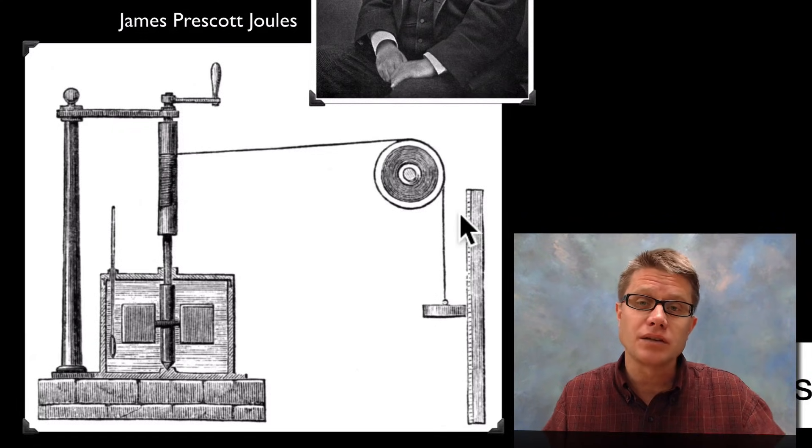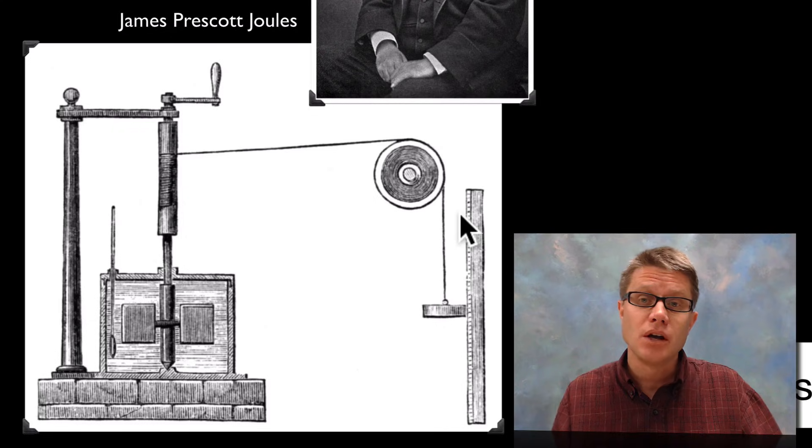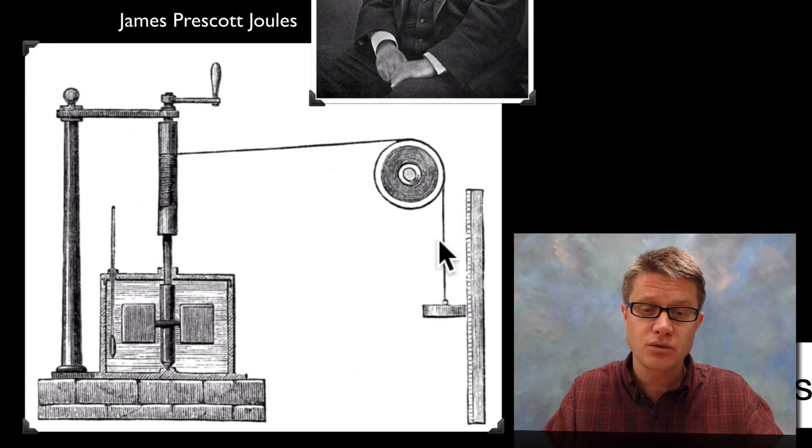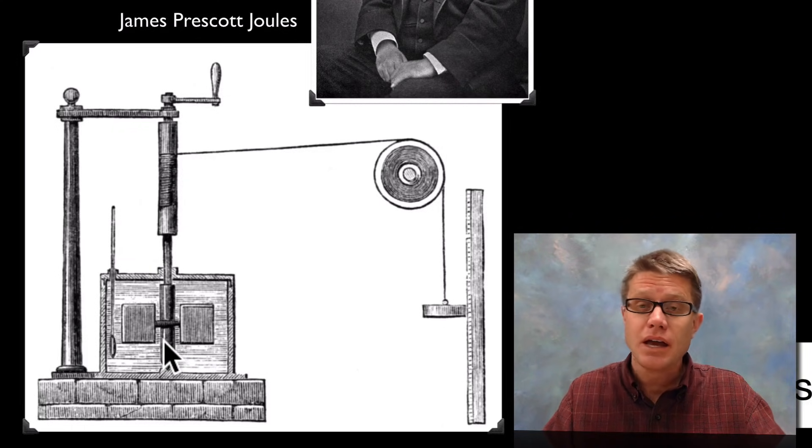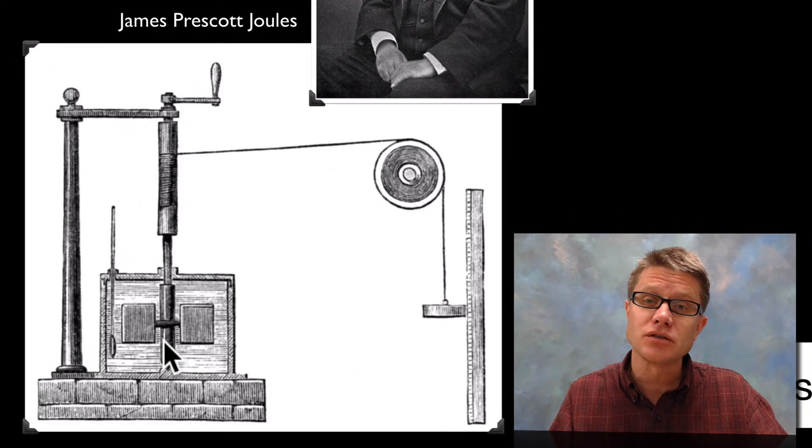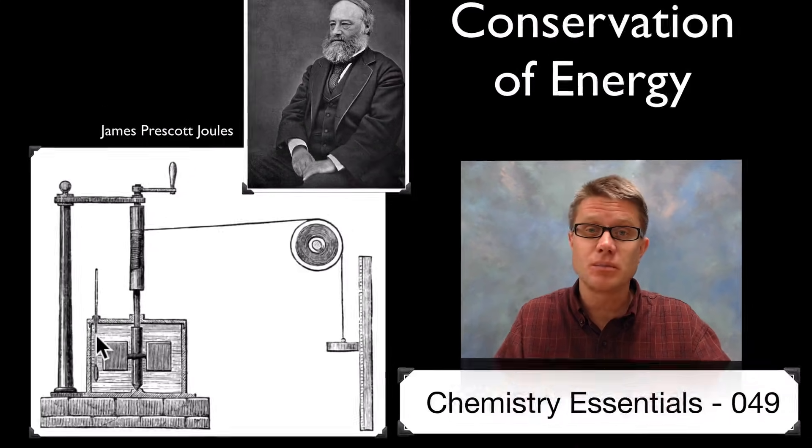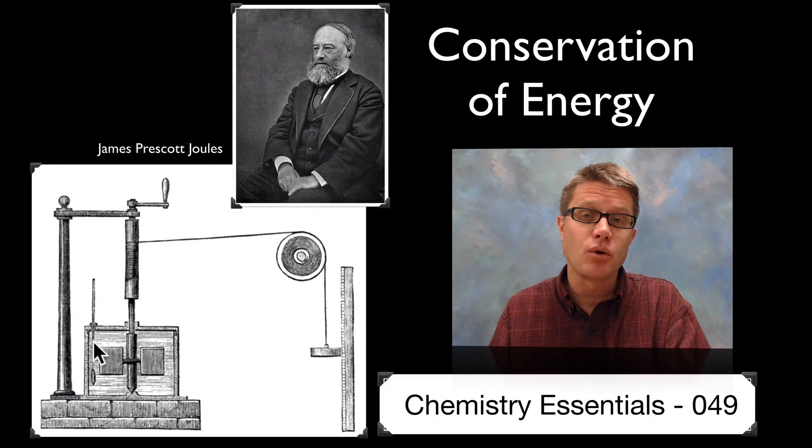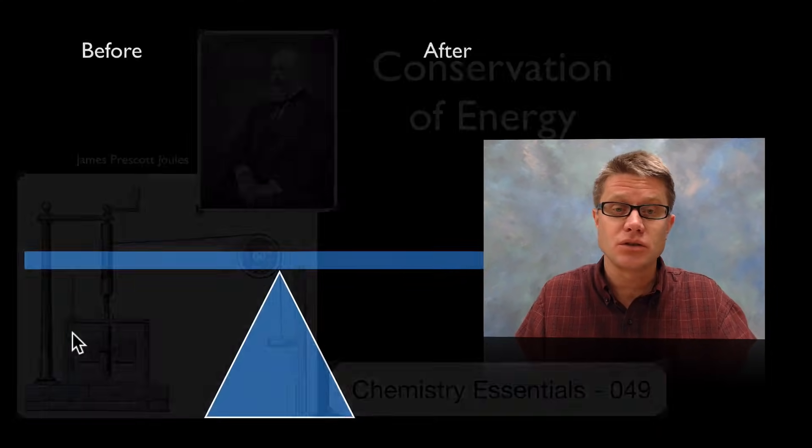What Joule is looking at is how can we convert that to changes in temperature, or how do we get that energy transfer through heat? As this weight falls, it's spinning these blades that are in water. And the friction of that spinning in the water is increasing the temperature. So what he was able to do is make measurements as to how that mechanical energy or that work of that falling weight is actually transferred into temperature changes.